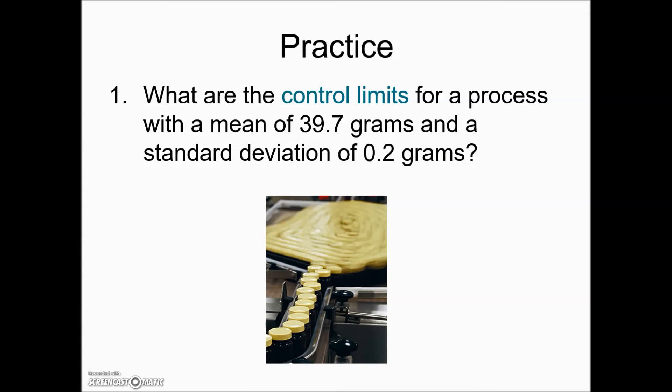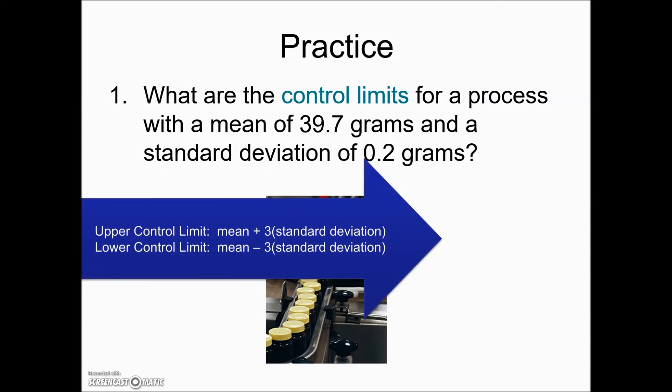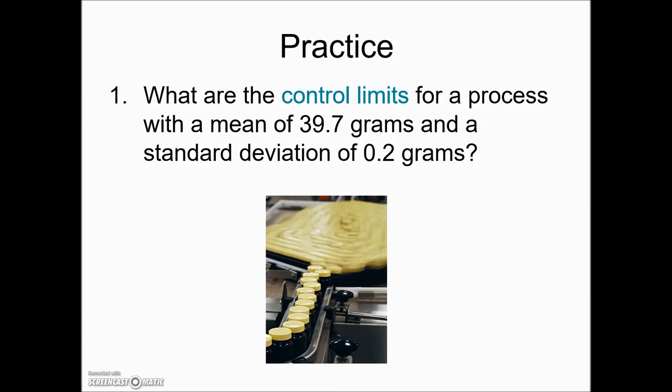A couple practice examples here. What are the control limits for a process with a mean of 39.7 grams and a standard deviation of 0.2 grams? We'll use our upper and lower control limit formulas by taking the mean plus or minus 3 times the standard deviation to get the 99.7% and the values you should get are 39.1 for the lower control limit up to 40.3 for our upper control limit. That represents 99.7% of the process is falling within those values.